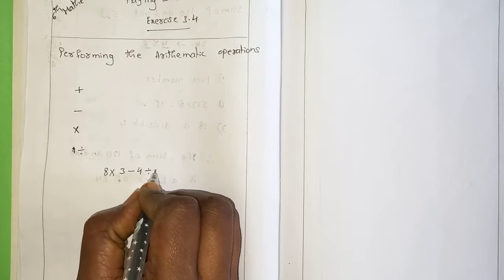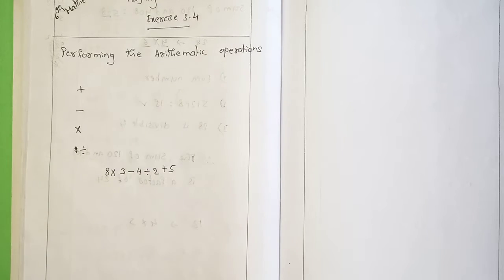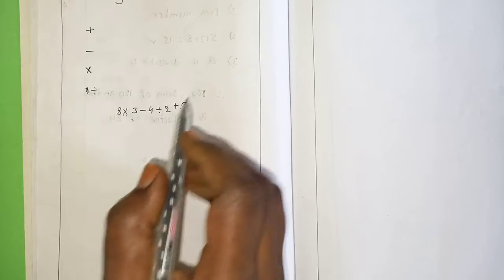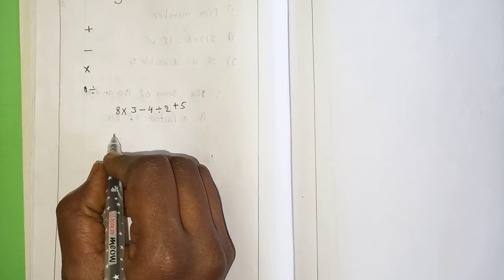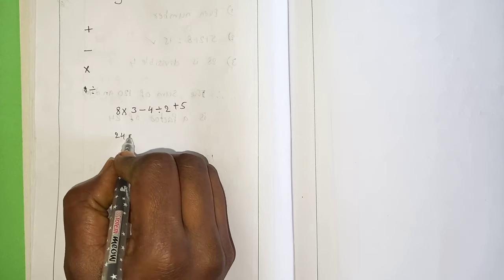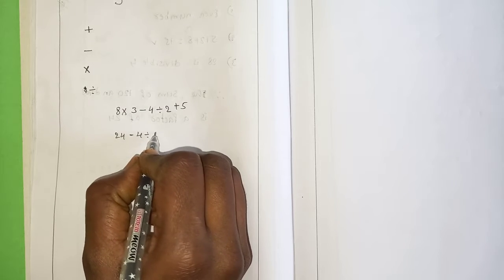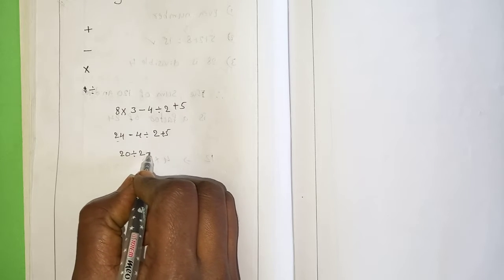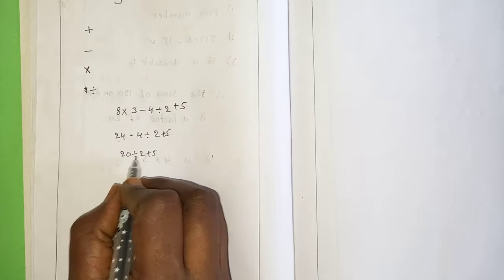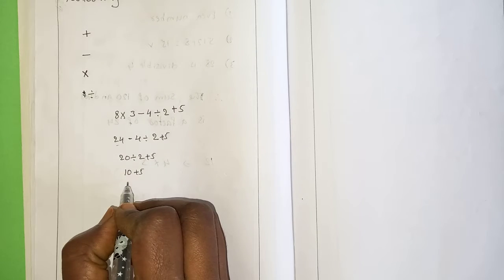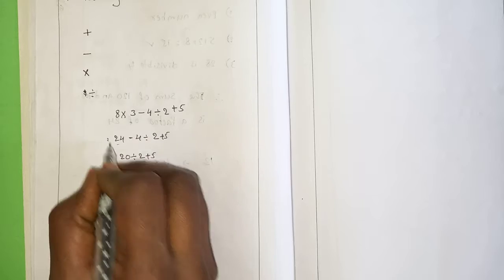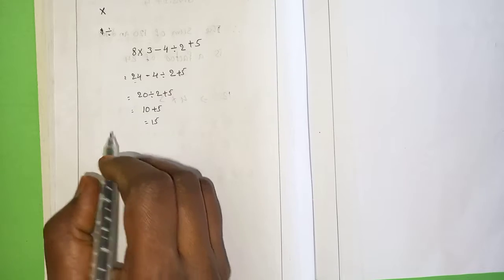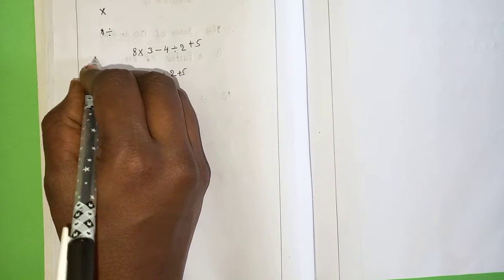...minus 4 divided by 2 plus 5. I am going to calculate this problem: 8 threes are 24, minus 4 divided by 2 plus 5. Now 24 minus 4 is 20, divided by 2 plus 5. 20 divided by 2 is 10, plus 5. The final answer is 15.